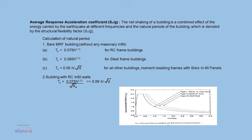The average response acceleration coefficient SA/G represents the combined effect of energy carried by the earthquake at different frequencies and the natural period of the building, denoted by structural flexibility factor SA/G. The values for SA/G are derived from a chart given in IS 1893. To derive the value of SA/G, we first calculate the natural period T using the formulas given in the code, and then read off SA/G from the corresponding curve.